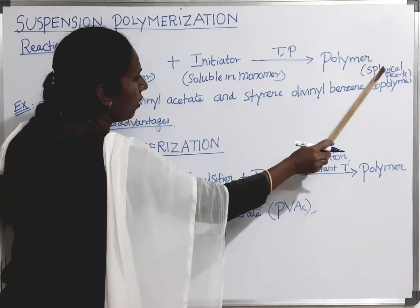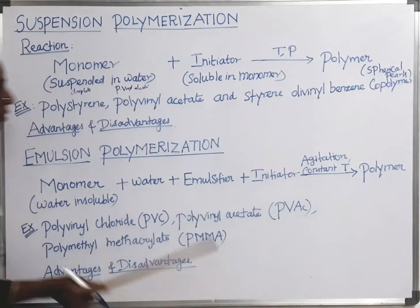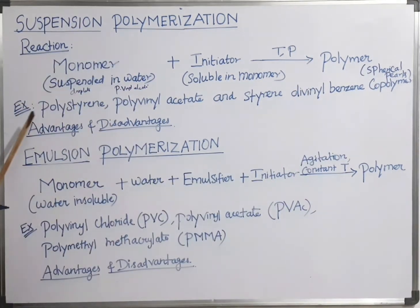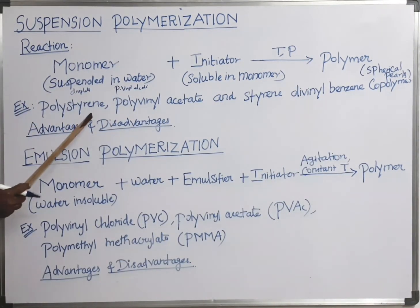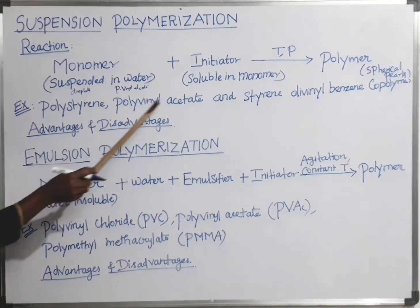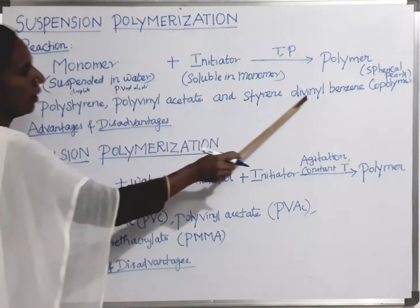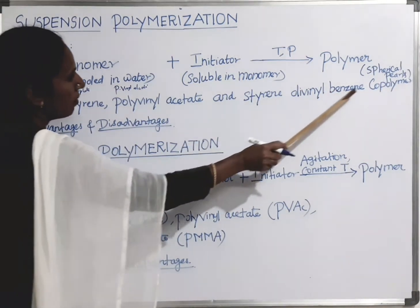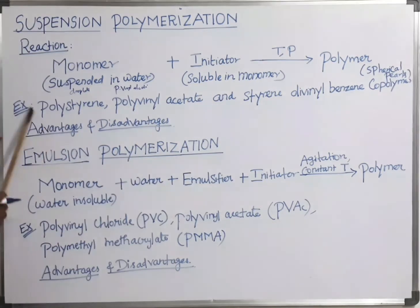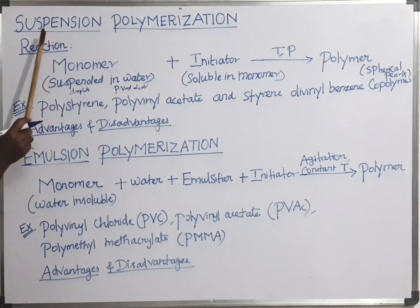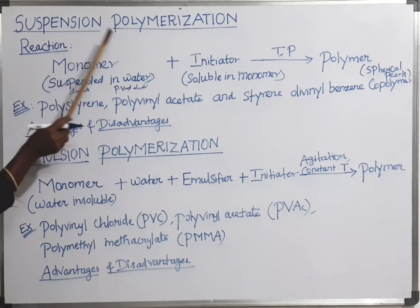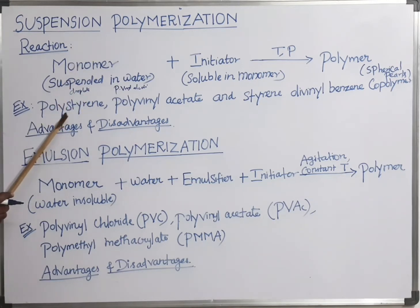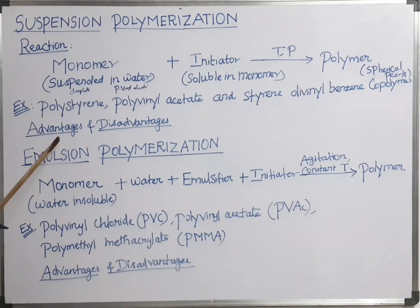Examples of suspension polymerization include polystyrene, polyvinyl acetate, and styrene-divinylbenzene copolymer. These polymers are manufactured by the suspension polymerization technique using a free radical initiator.